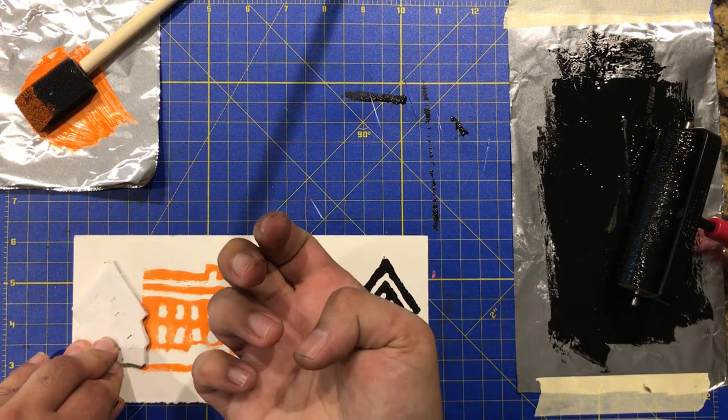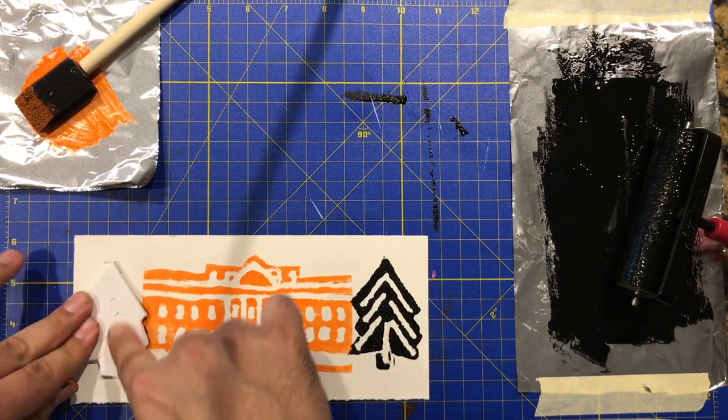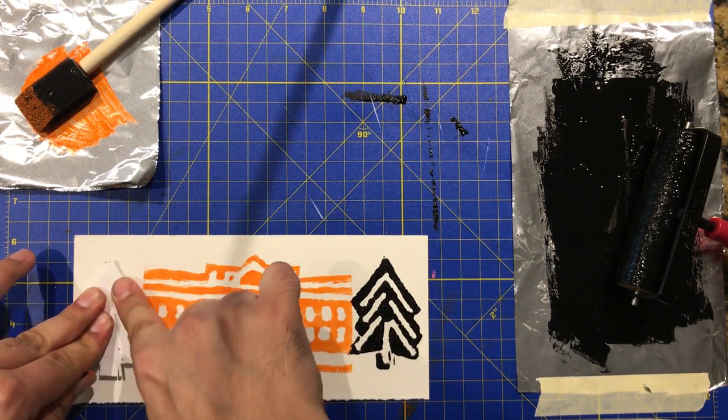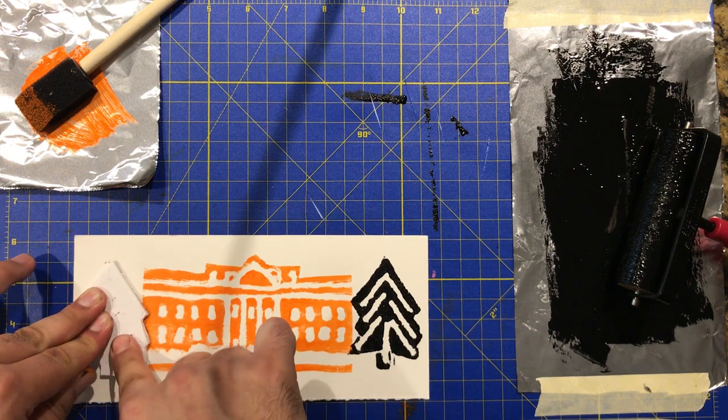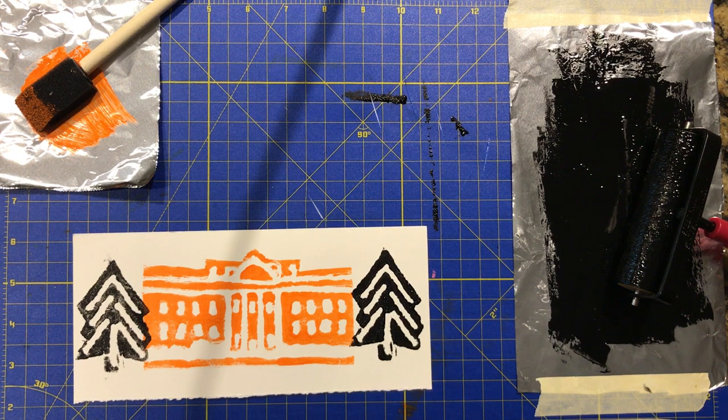Be careful. I have ink on my hands and I just got some of the paper. That's the hardest part about printmaking. It's not transferring ink where you don't want it. Good. And that is my white house and two trees.